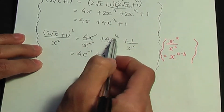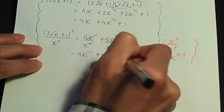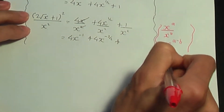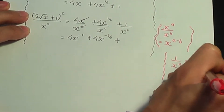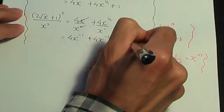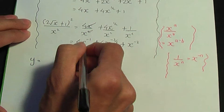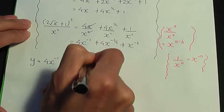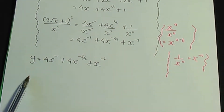When dividing two terms of the same base, we subtract the powers — top power minus bottom power. So x to the half divided by x squared gives x to the power half minus 2, which is x to the minus 3 over 2. And remember, 1 over x^n is x to the minus n, so 1 over x² is x to the minus 2. So y equals 4x to the minus 1 plus 4x to the minus 3 over 2 plus x to the minus 2.